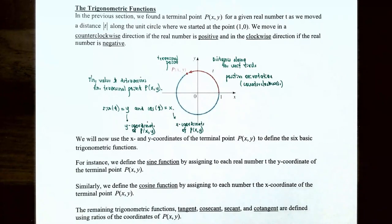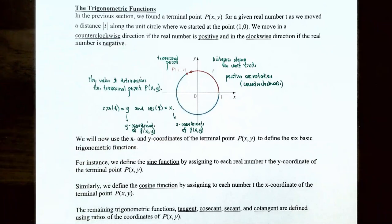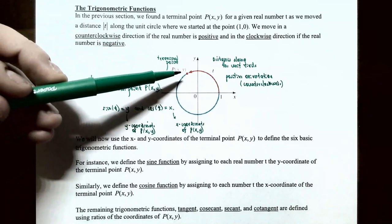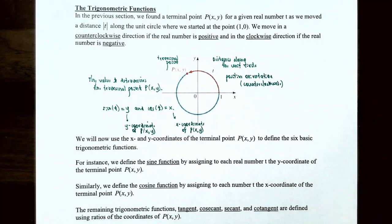In the previous video we talked about how to find a terminal point P, which has an x-coordinate and a y-coordinate, for any given real number T. T defines the distance traveled counterclockwise if T is positive, or clockwise if T is negative, along the unit circle starting at the point (1, 0). We're going to use the x-coordinate and y-coordinate of this terminal point to define the six basic trigonometric functions.